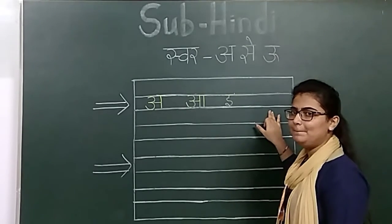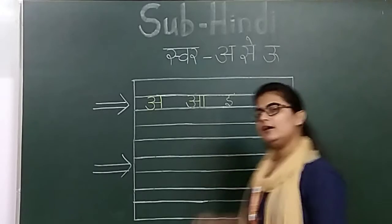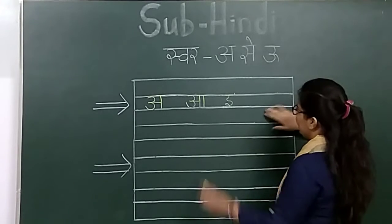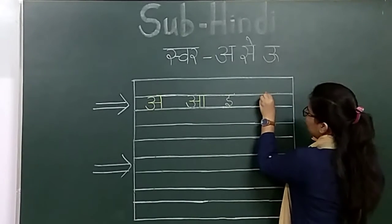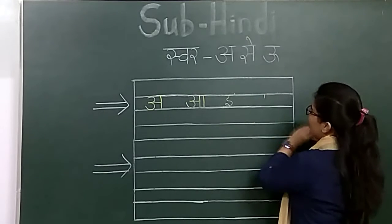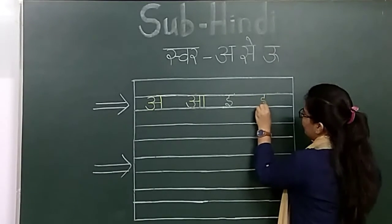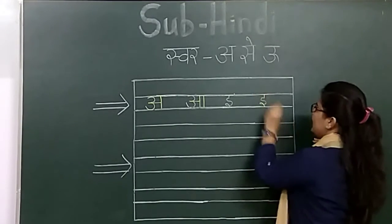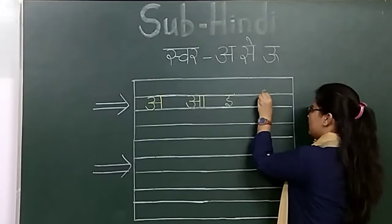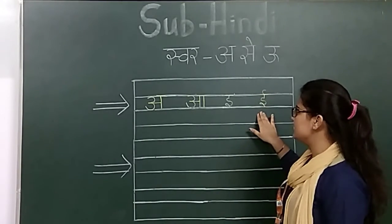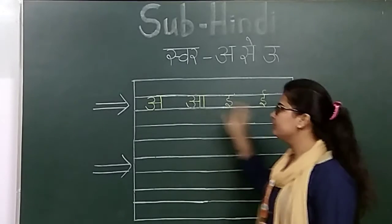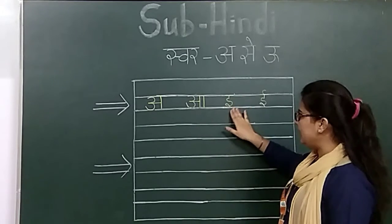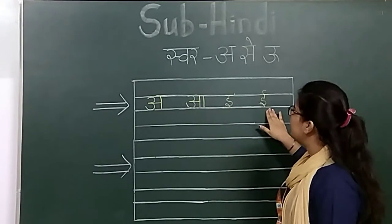Then next one — E say E. Body say E. So here we write body say E. First we make a small standing line, then small S, then a curve, then a sleeping line, then a small curve. Which one is this? Body — E say E. So we have: A say Anna, A say A, E say Emily, E say E.